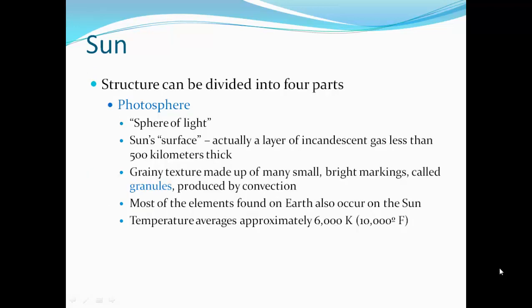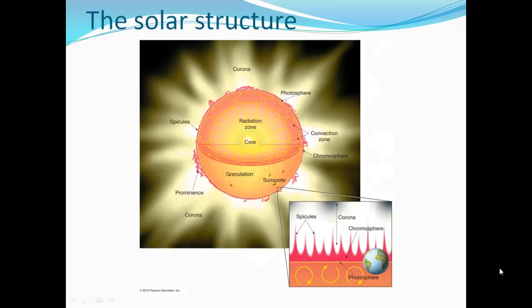The photosphere is a sphere of light. The sun's surface is actually a layer of incandescent gas, less than 500 kilometers thick. Grainy texture made of many small bright markings called granules produced by convection. Most of the elements found on Earth also occur in the sun. The temperature averages approximately 6,000 degrees Kelvin, or 10,000 degrees Fahrenheit.